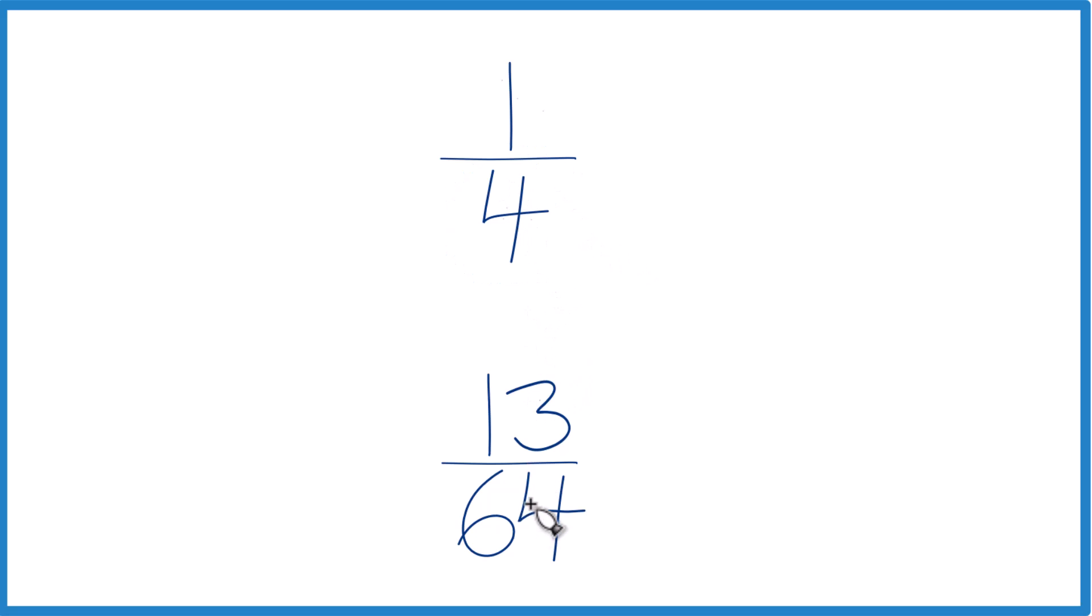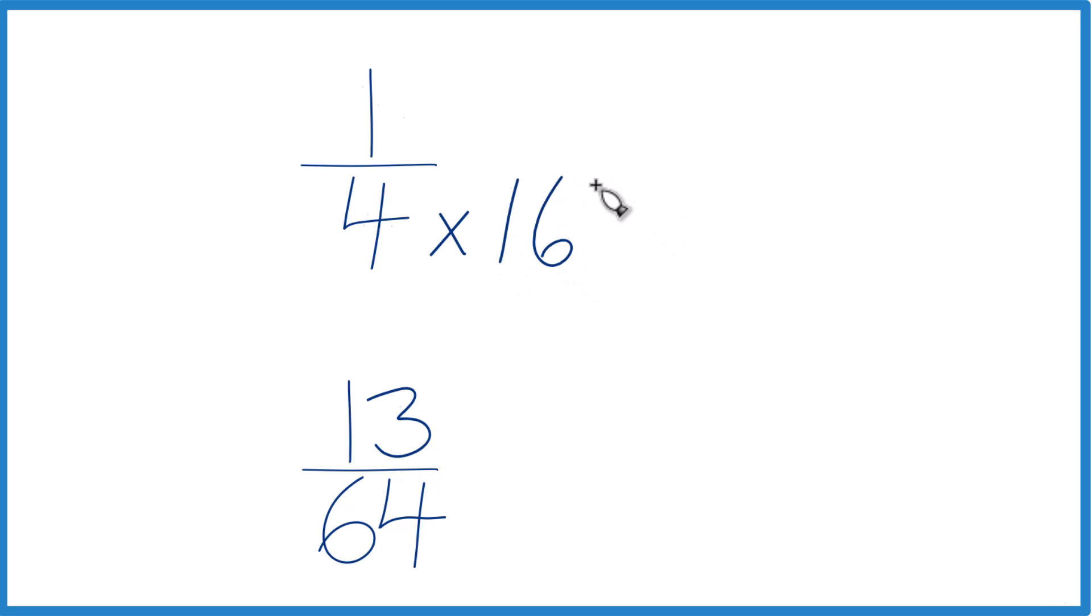4 goes into 64, 16 times. 4 times 16, that equals 64. Down here we already have 64 as our denominator. Let's just bring this across.